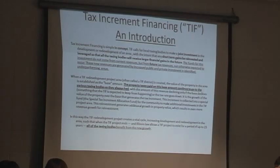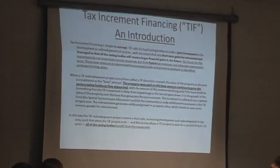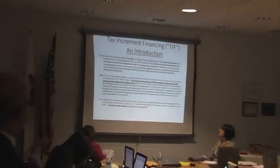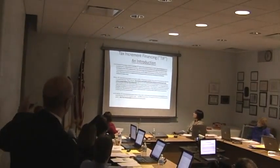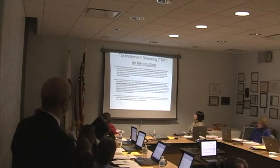That increment is what is used for improvements in the area — that can be a number of different things: public works projects, road repaving. In this case, there's a school benefit that Joe already outlined, which is a tremendous opportunity. So the increment that is collected over time after that base year — that incremental increase — is collected into a special fund. With that fund, the community can make additional investments in the TIF project area or in related areas if they are associated with the TIF. In this case, it's the school.